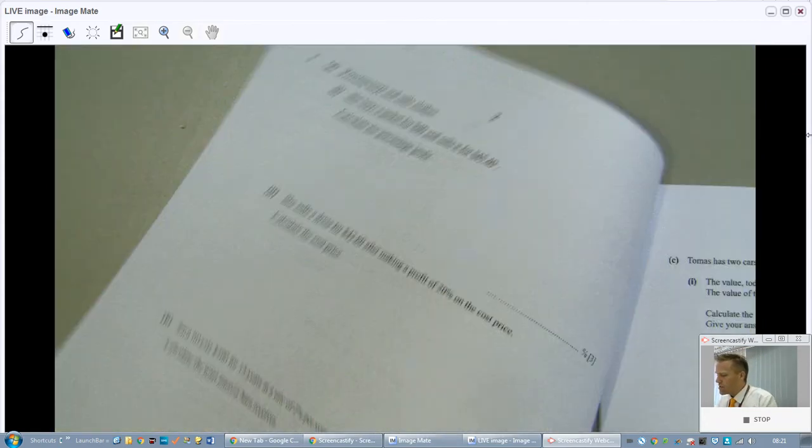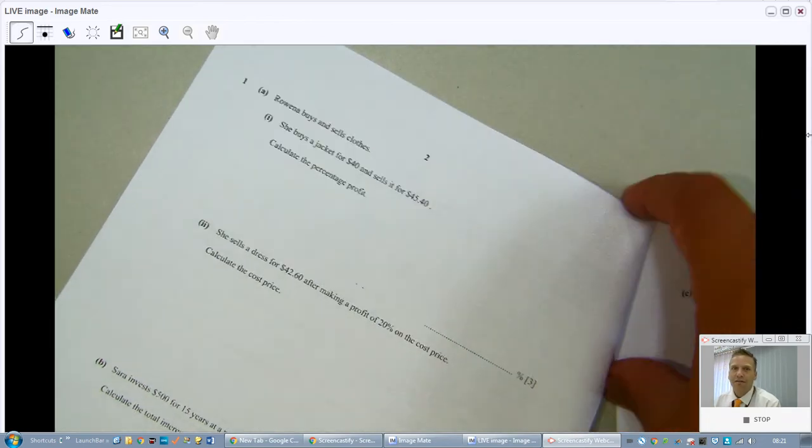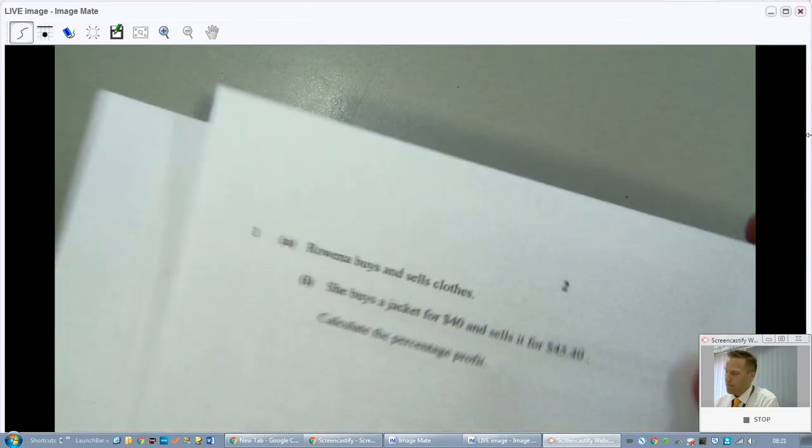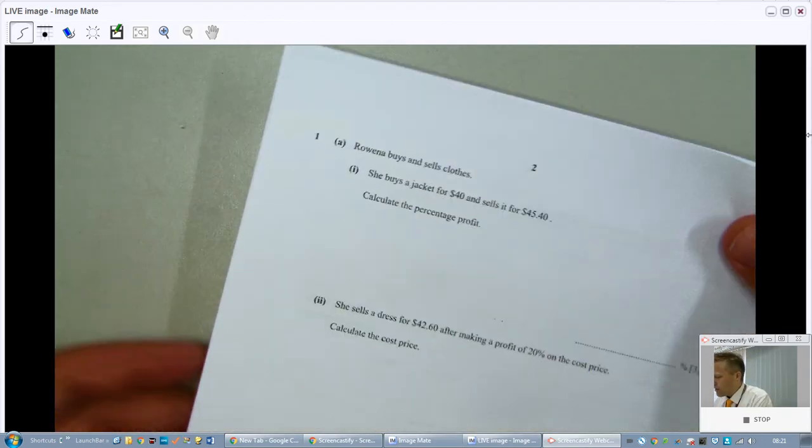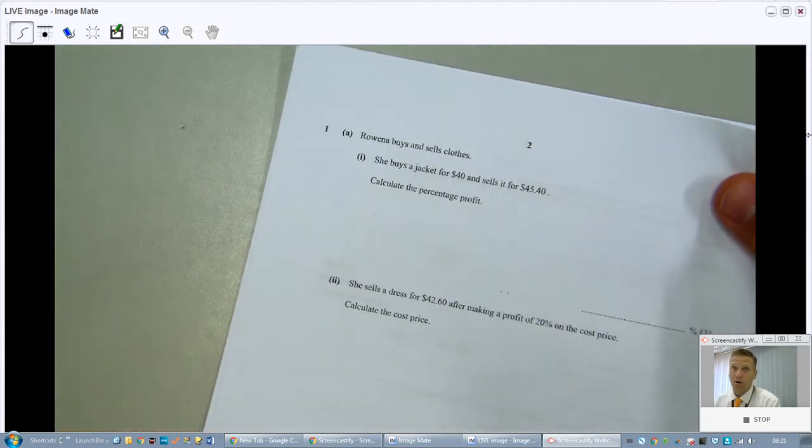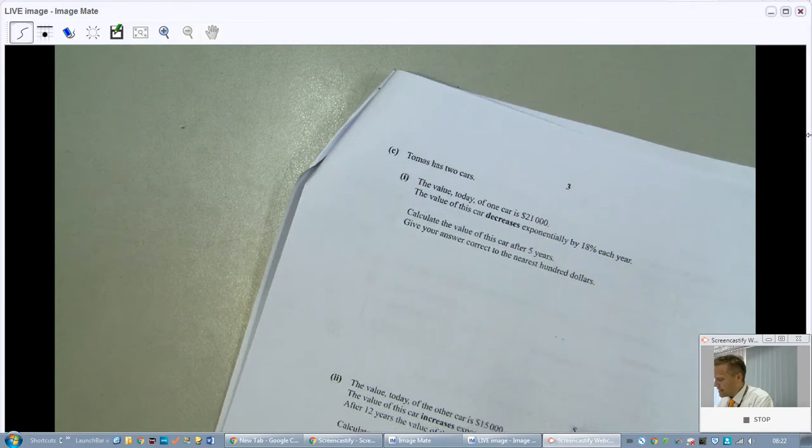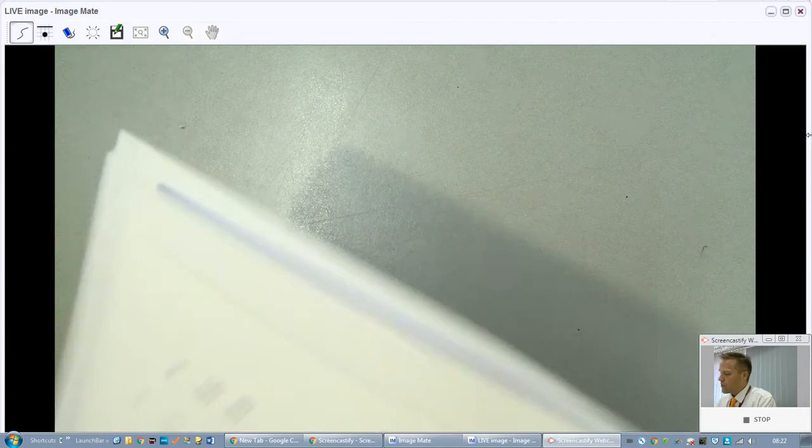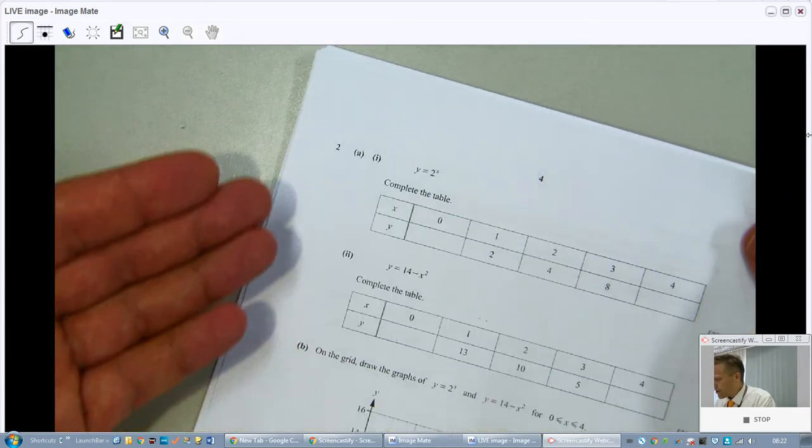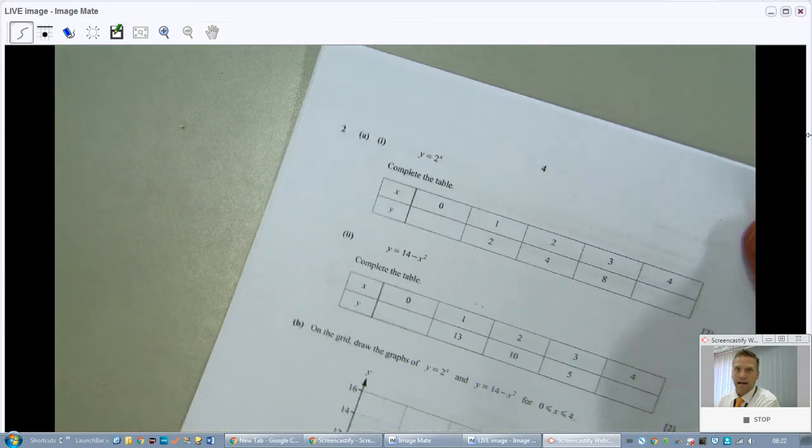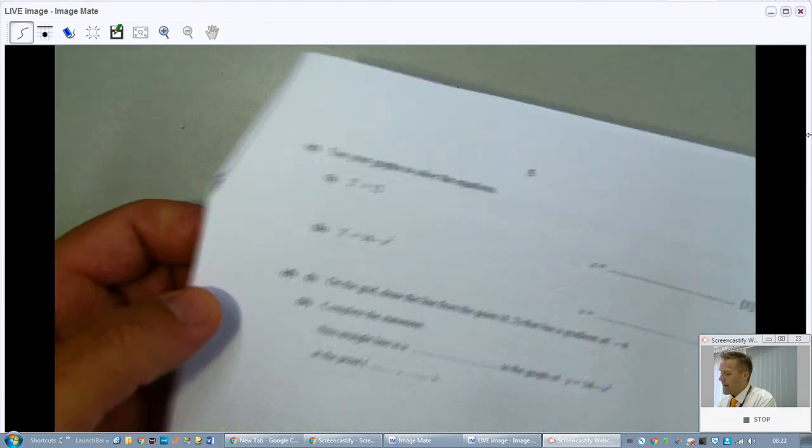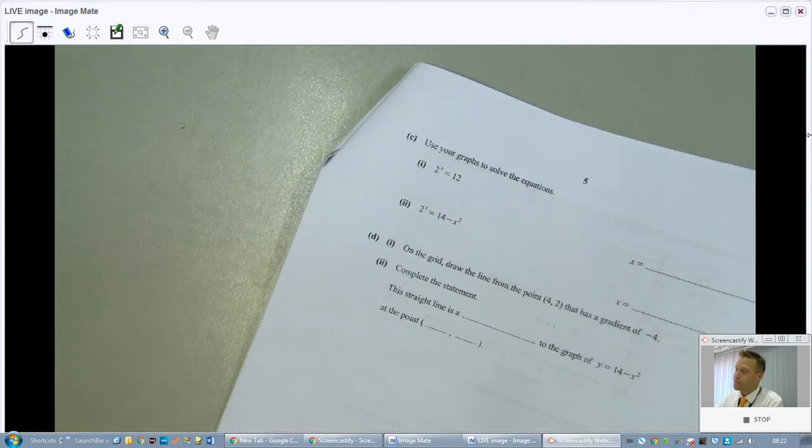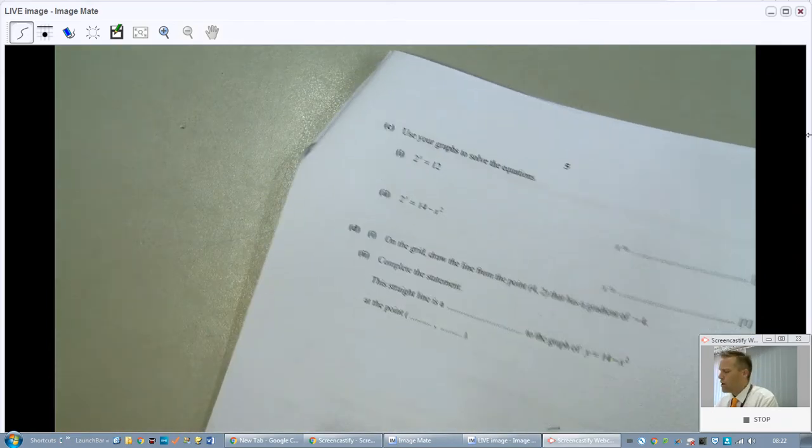Before you just dive into the first question, have a quick flick through the paper. Question one is about percentages, perhaps a ratio question. And that is what you would expect from question one. I see some interest questions there. Nothing unusual. If I go to question two, it's about graphing. I see a quadratic and an exponential. Probably going to ask me to solve it graphically as well. A very typical paper four question.